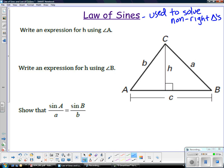Write an expression for h using angle A. Let's look at that triangle. In terms of A, h is the opposite and b is the hypotenuse. So the sine of angle A is the opposite over the hypotenuse. If I cross multiply both sides by b, h is going to be b times the sine of angle A.